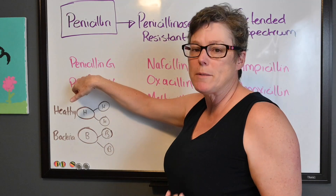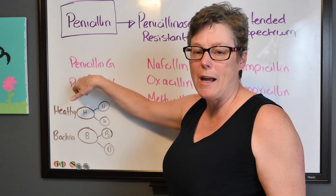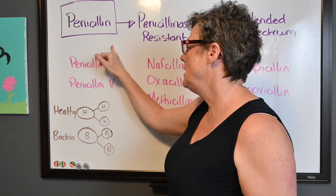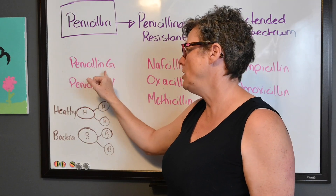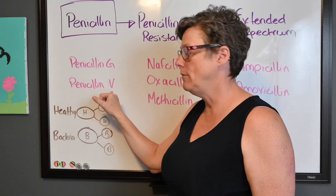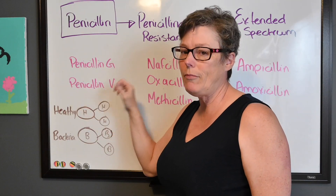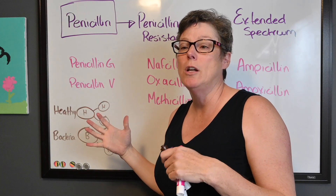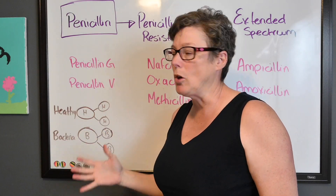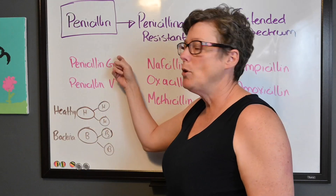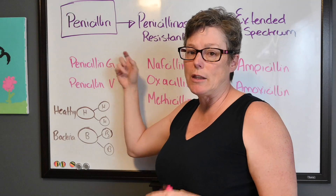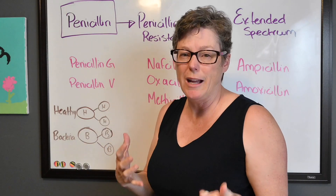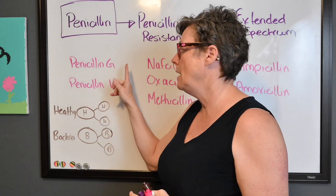The first penicillins to be used were back in the 1920s, and these were our original classifications: penicillin G and penicillin V. They're used primarily for gram-positive skin infections, but you want to make sure that the drug you're giving matches the illness — so check your drug guide as a nurse.